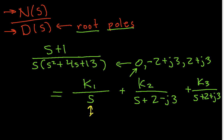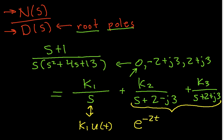Each of these terms has an inverse Laplace transform. The term k1 over s has inverse Laplace transform k1 times u(t). The inverse Laplace transform of the two complex conjugate terms together is going to be e to the minus 2t times a cosine of 3t plus a phase term. The imaginary part gives us the frequency of the sinusoid, and the constants k2 and k3 tell us whether it's a cosine, a sine, or some combination. For now, we just know it has some sinusoidal component that wiggles.